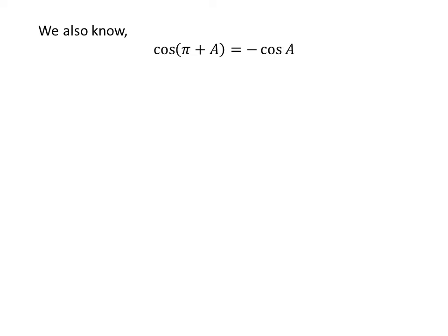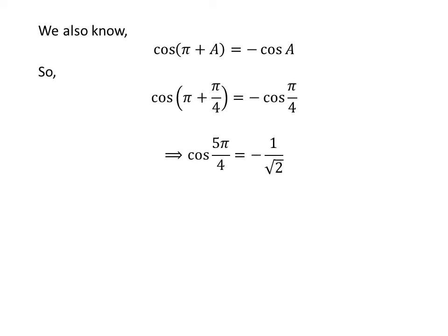We also know the famous trigonometry identity: cosine of pi plus a is equal to minus cosine of a. The proof of this identity is given in the video in the upper right corner, and the link is in the description. Applying this identity gives us cosine of 5 times pi upon 4 is equal to minus 1 upon square root of 2.